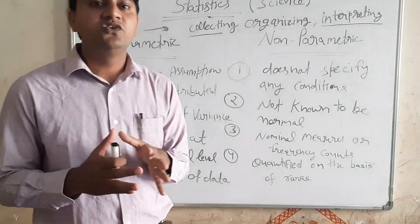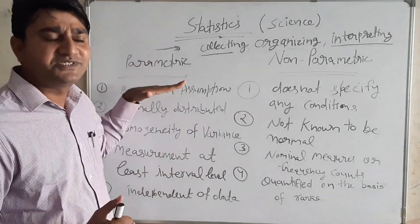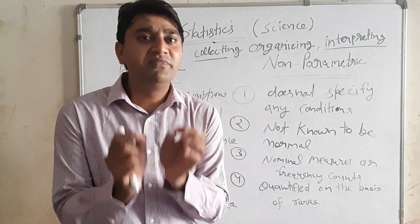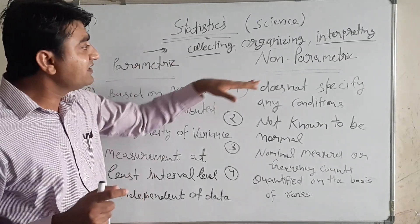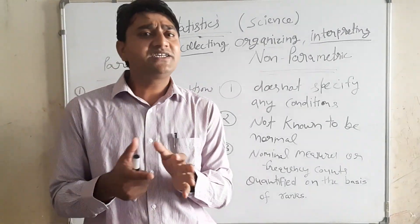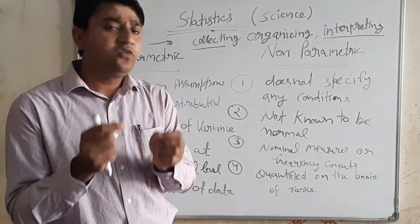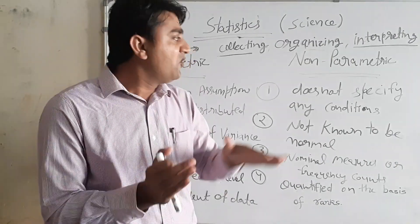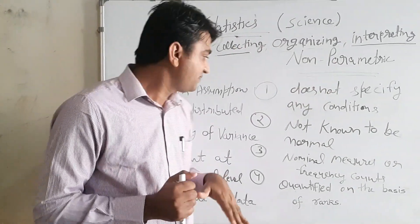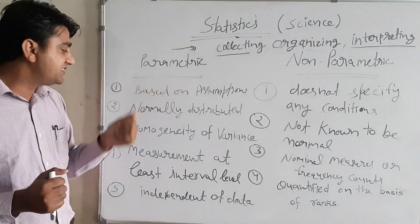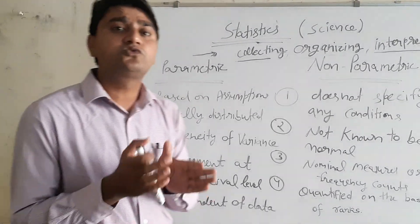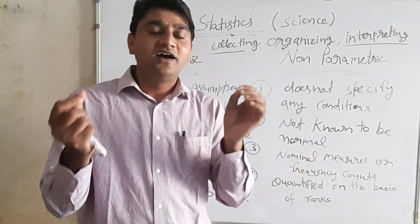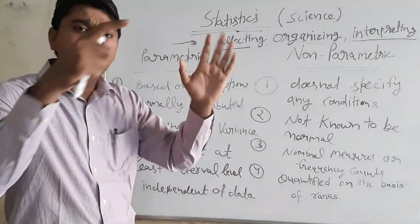Parametric statistics means which is based on some assumptions — based on some conditions. We have to meet those conditions. In parametric statistics, data should be normally distributed, meaning the population's distribution in that area should be normal.